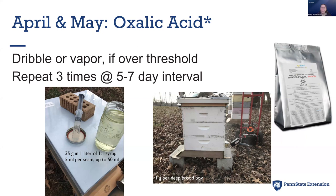My rotation approach: early in the season — April and May — when mites are above threshold, I use an oxalic acid treatment. There are two ways of applying it. One is as a dribble, mixed with sugar syrup and dribbled onto the bees. This only kills mites on adult bees, so you need to repeat it — going in three times at a five-to-seven day interval — which effectively makes it a long-term treatment, treating the mites as they come out of the cells.